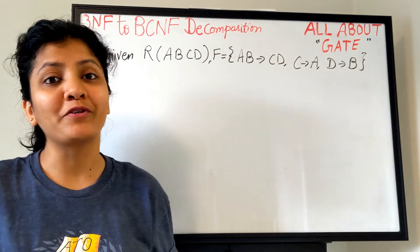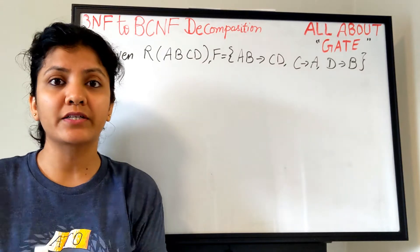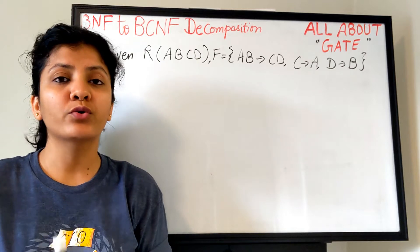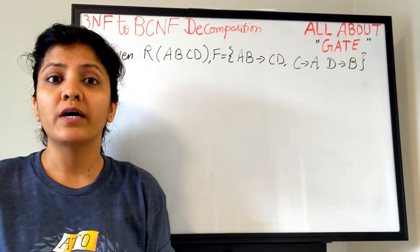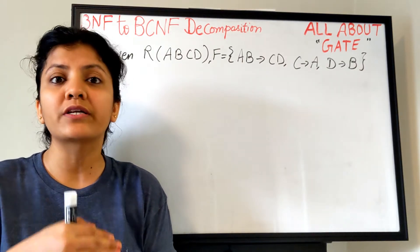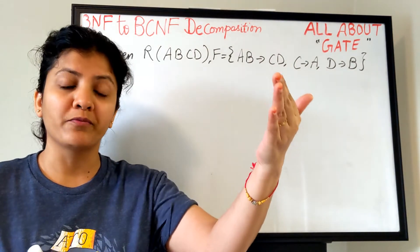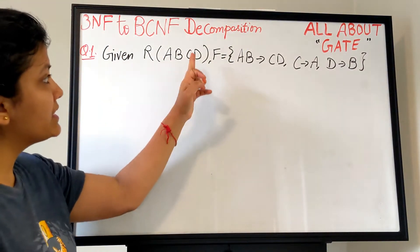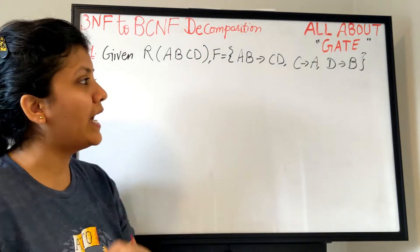Welcome to the YouTube channel where we talk about the GATE exam. We are studying DBMS under normalization, specifically the decomposition part. We have understood how to reach from 1NF or 2NF to the third normal form, and in this video I'm going to show you with an example how you can decompose a relation given in third normal form into BCNF. The example relation R has attributes ABCD and the given functional dependencies are AB→CD, C→A, and D→B.